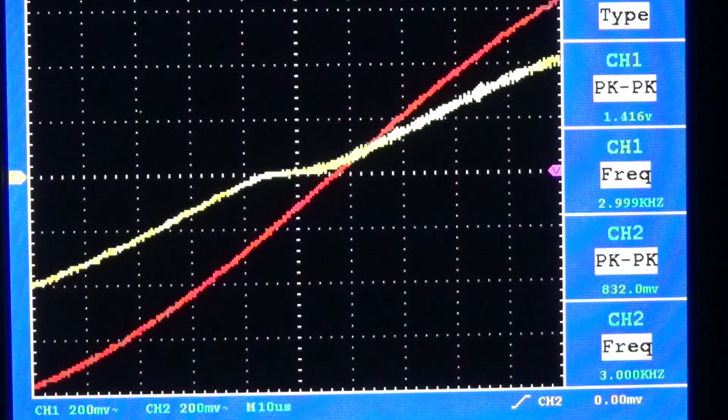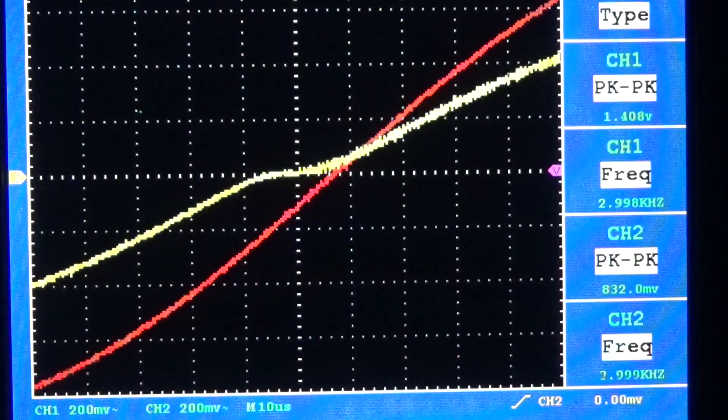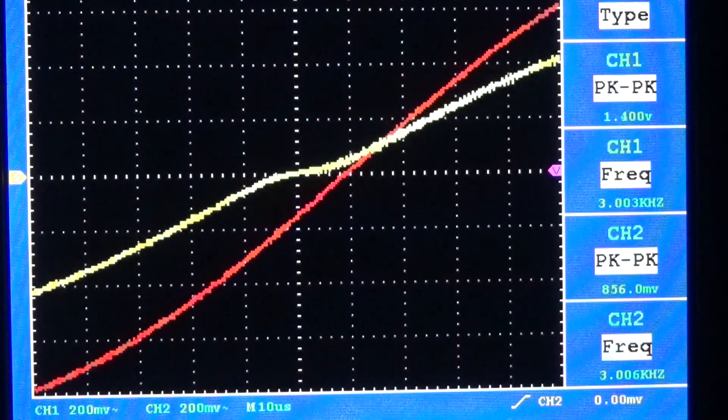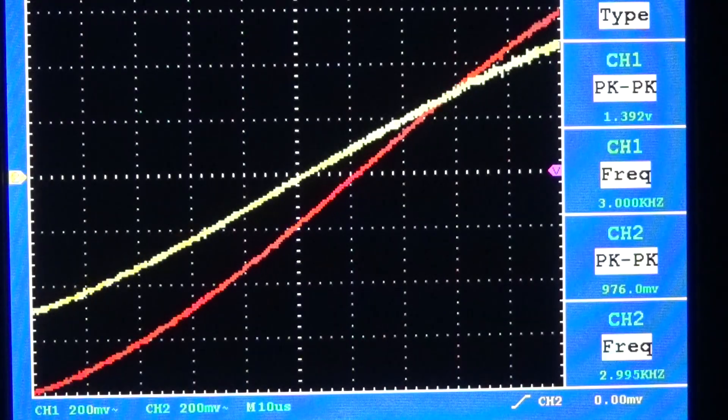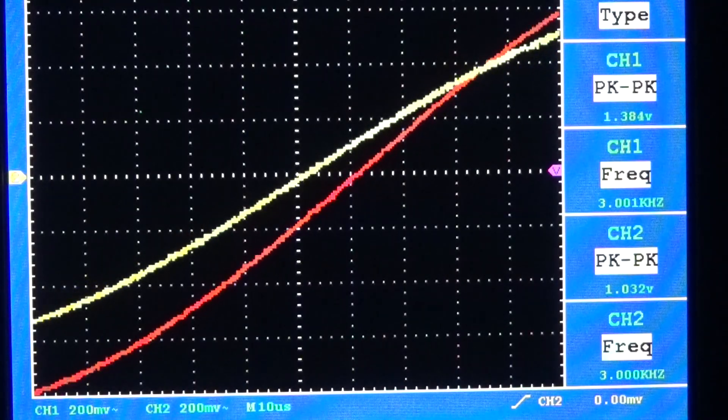Here's a closer look at the crossover distortion. I'll demonstrate why the VBE multiplier can be so valuable. I'll go ahead and increase the bias voltage and make the output signal more linear.